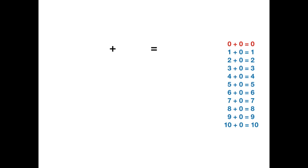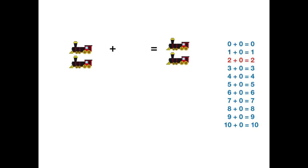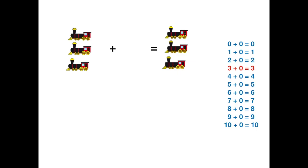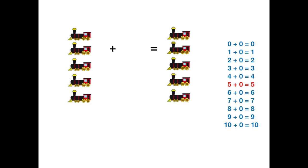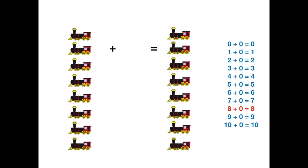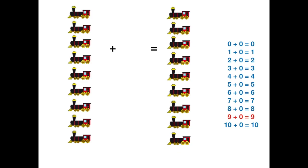0 plus 0 equals 0. 1 plus 0 equals 1. 2 plus 0 equals 2. 3 plus 0 equals 3. 4 plus 0 equals 4. 5 plus 0 equals 5. 6 plus 0 equals 6. 7 plus 0 equals 7. 8 plus 0 equals 8. 9 plus 0 equals 9. 10 plus 0 equals 10.